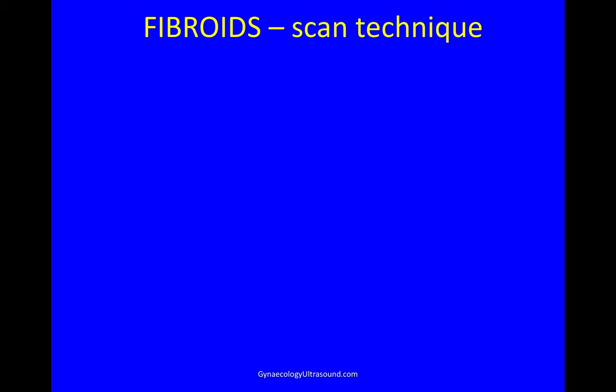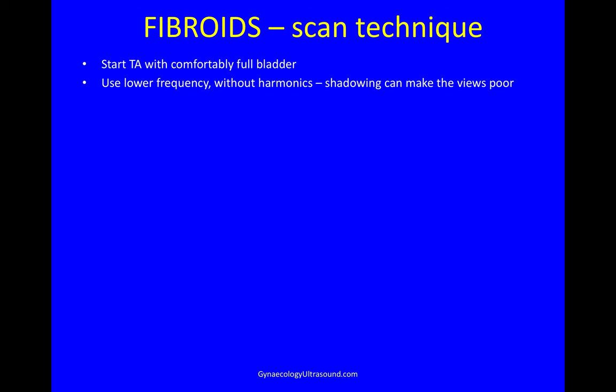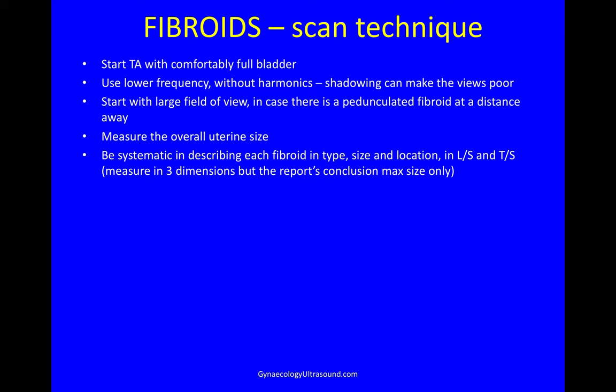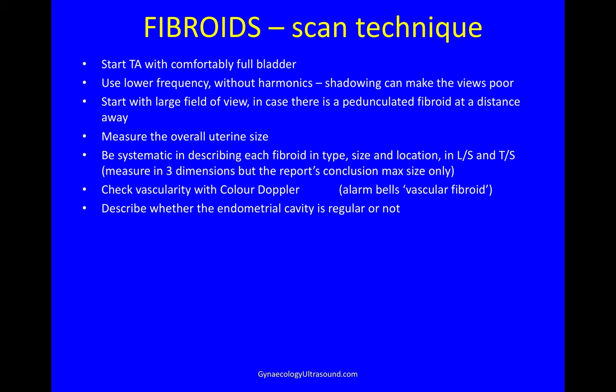Scan technique for fibroids is to start transabdominally with a comfortably full bladder, using lower frequencies, often without harmonics, because shadowing can make the views poor. Start with a large field of view in case there's a pedunculated fibroid, and then measure the overall uterine size in three dimensions. Then be systematic in describing each fibroid in type, size, location in both planes. Check vascularity with colour Doppler — if you see a vascular fibroid you have to be very careful that it's not in fact a malignancy. Describe whether the endometrial cavity is regular and look for the ovaries.